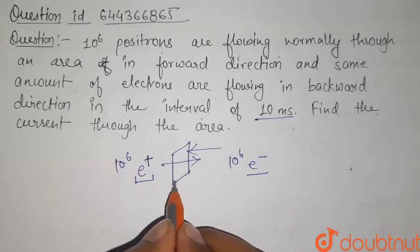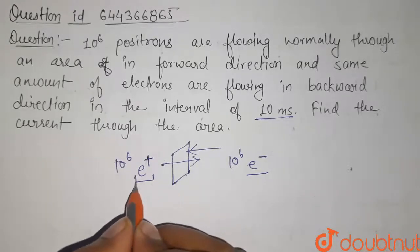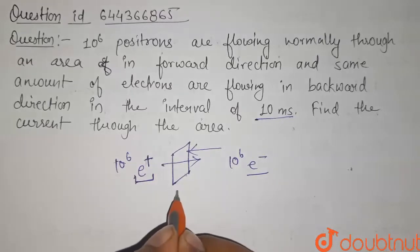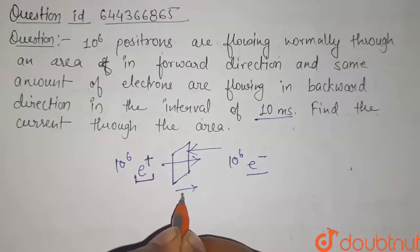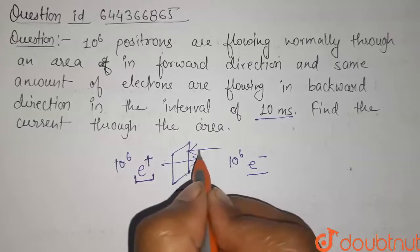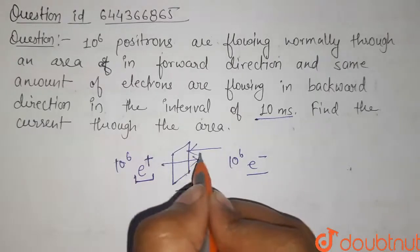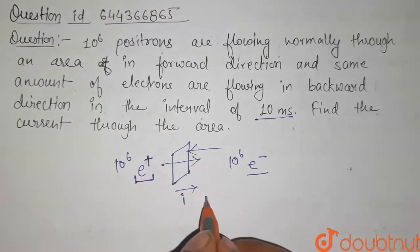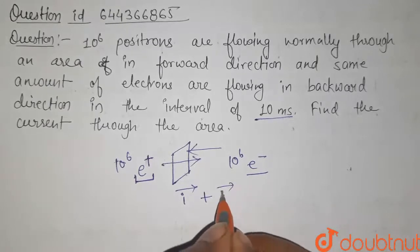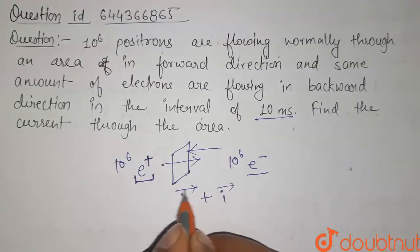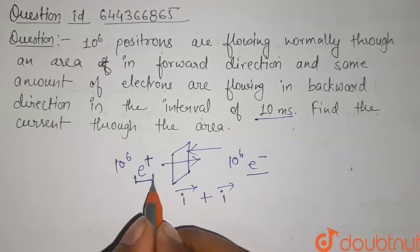The direction of current is given by the same direction as that of the positron. So the direction of current for positrons will be in this direction, and for electrons, it is in the opposite direction of the flow of electrons. So for electrons, the current will be flowing in the same direction as that of the positrons.